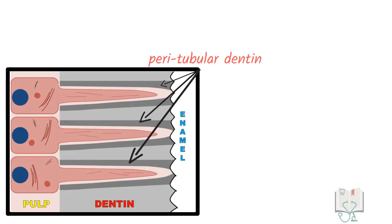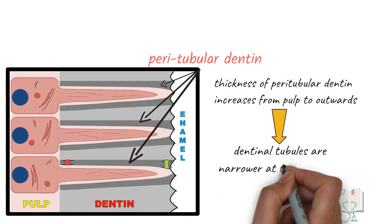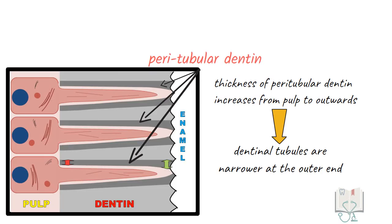The thickness of peritubular dentine increases as we move from the pulp end to outwards. This is the reason why dentinal tubules are narrower at the outer end and wider at the pulpal end.